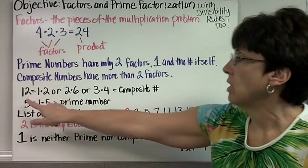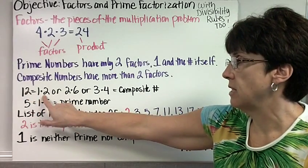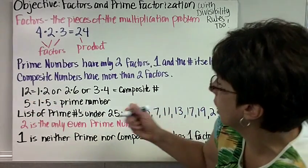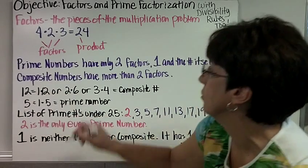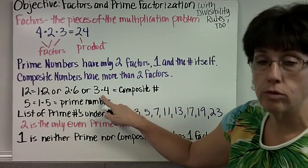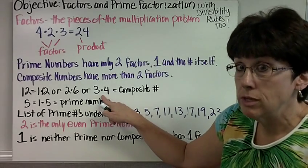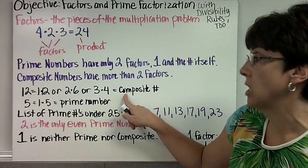For example, the number 12, you could say that's 1 times 12, or 2 times 6, or 3 times 4. So that's more than two factors, so 12 is a composite number.